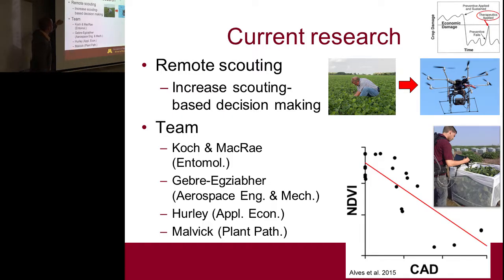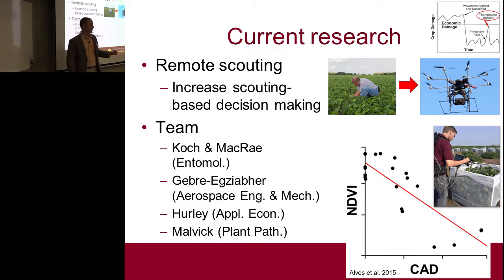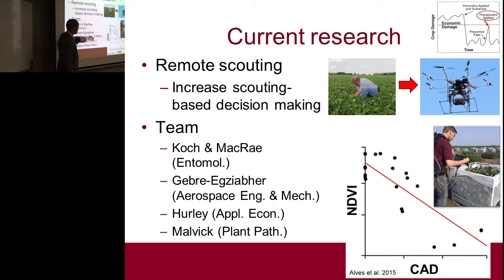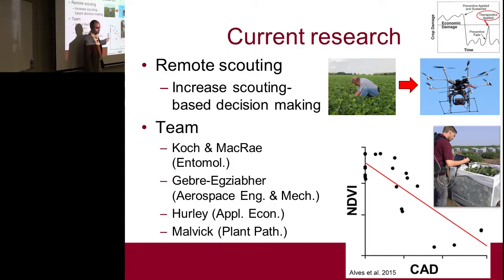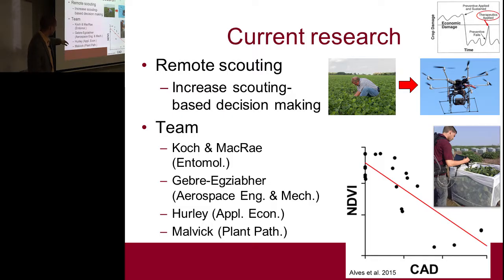Another area of current research is remote sensing — rather than walking through chest-high soybean counting tiny aphids, can we fly over fields using hyperspectral or multispectral sensors to detect soybean plants stressed by this pest? Work so far has documented that as cumulative aphid days increase, there is a decrease in NDVI, a common vegetative index. Ongoing work is exploring whether these signals can be detected from aerial platforms like UAVs, and whether this stress can be distinguished from disease or drought, in collaboration with folks from aerospace engineering, plant pathology, and applied economics.